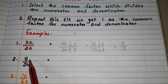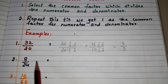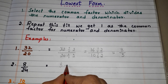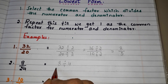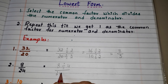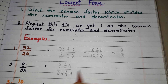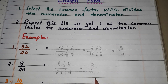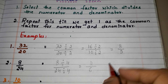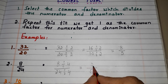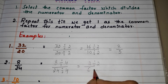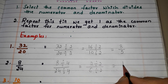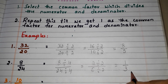Let us go to another example. Here we have the fraction 8 by 24. Here we can select the factor 4, because 4 divides 8 as well as 24. Divide: 8 divided by 4 by 24 divided by 4. Write the quotients here: 2 by 6. Again we can select the number 2, because 2 divides 2 as well as 6. Write the quotients here: 1 by 3.